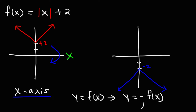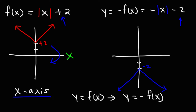To get the new function, all we need to do is put a negative sign in front of f. So y = -f(x). We multiply by negative 1, giving us negative absolute value of x minus 2. The negative sign in front of the absolute value symbol changes the direction of the graph — rather than opening upward, it opens downward. Switching positive 2 to negative 2 changes the y-intercept from +2 to -2, shifting it 4 units down. That's how we reflect over the x-axis and adjust the function: multiply f(x) by negative 1.